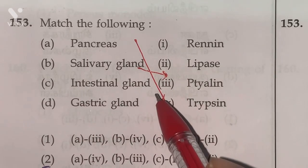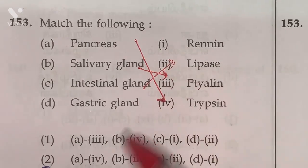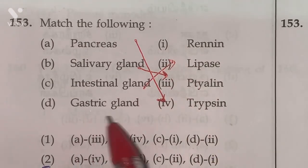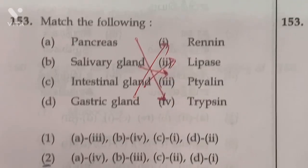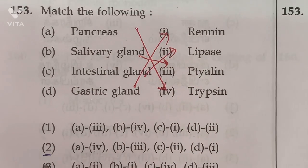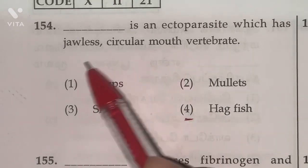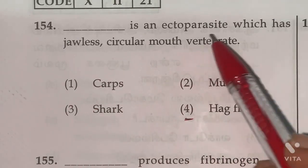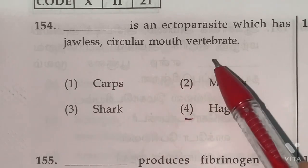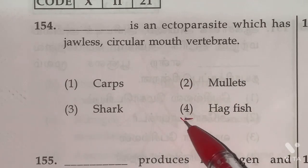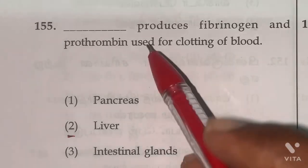Continuing question 153: intestinal gland secretes lipase, and gastric gland secretes rennin. According to this, option two is the right answer. Question 154: The blank is an ectoparasite which has a jawless circular mouth — the vertebrate is the lamprey fish. Option four is the right answer.